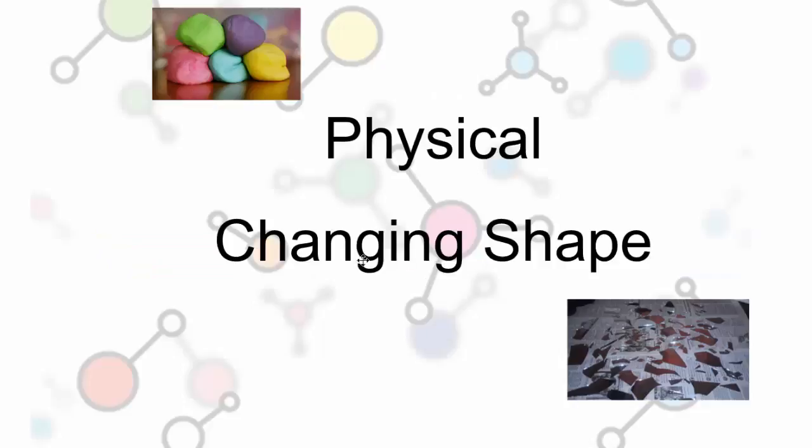A change in its shape, if I were to mold Play-Doh or if I were to break a mirror. Now sometimes I'll hear grade school teachers say that if you can't undo it, then it's chemical. That's not exactly true. Because look, I can't very easily put this mirror back together, but that's definitely still a physical change. Each piece of this is still glass.